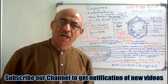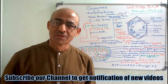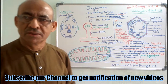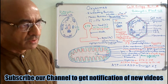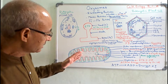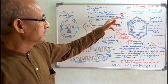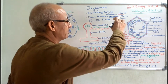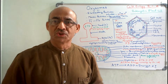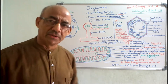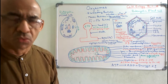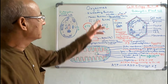Oxysomes are micromolecular repeating units of mitochondrial structure and function, because they are the site for the synthesis of energy in the form of ATP. They are found in great number inside the mitochondria — their number may vary from 10 to the power 4 to 10 to the power 5. Oxysomes are known by various names; they are also called as elementary particles.